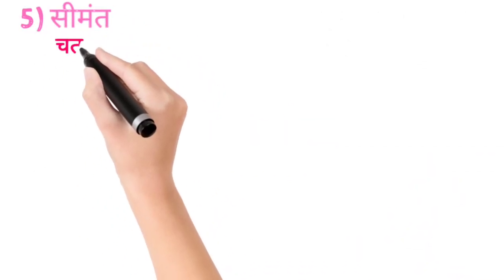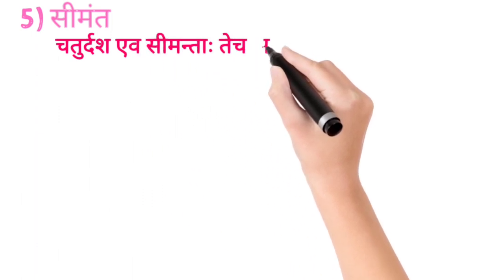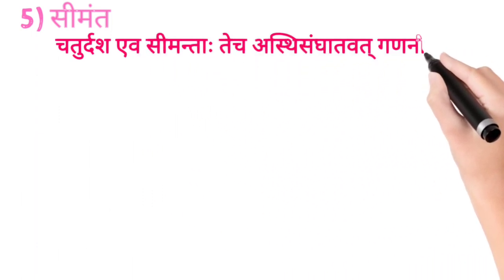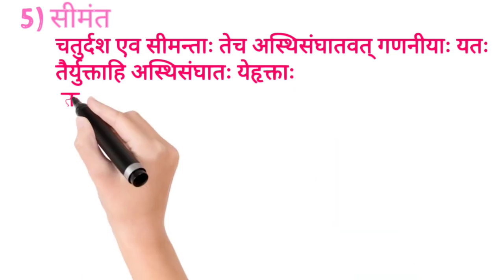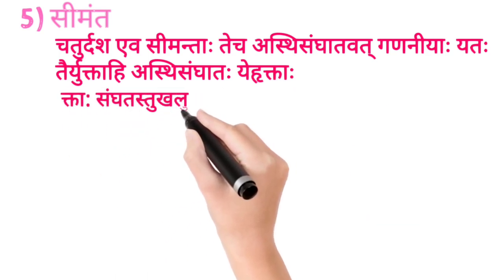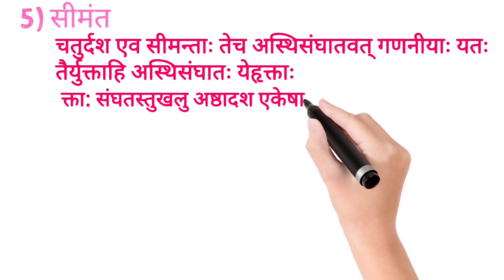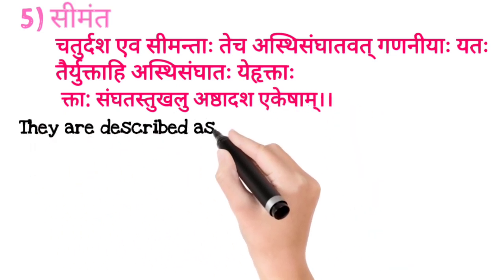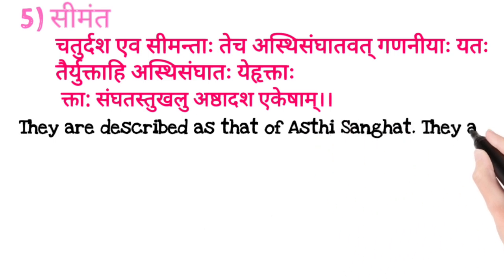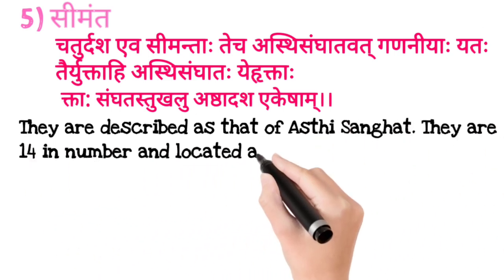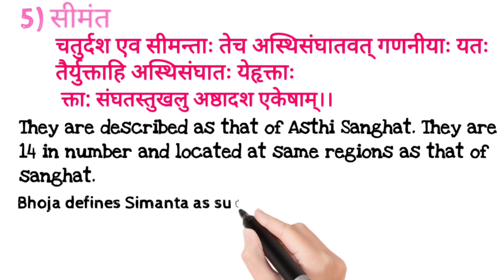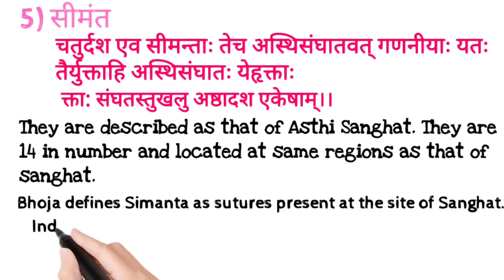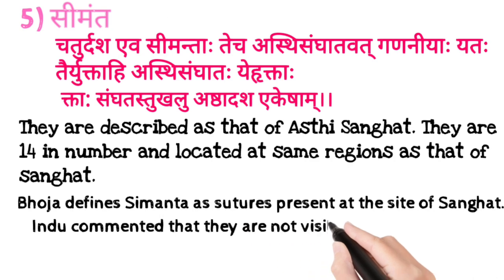Now coming to the Simaant. They are described as that of Asthi Sangat. They are 14 in number and located at the same regions as that of Asthi Sangat. Bhoj defines Simaant as the sutures present at the site of Sangat. Hindu commented that they are not visible on the skin of the skull. Agar aapko video achhi lagi ho to don't forget to subscribe.